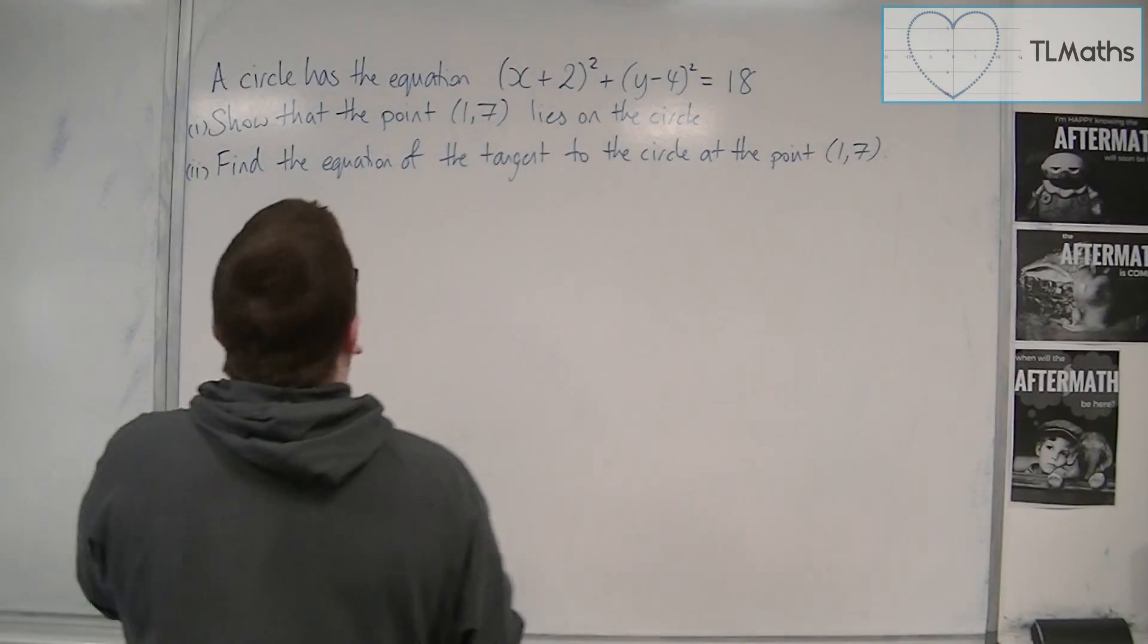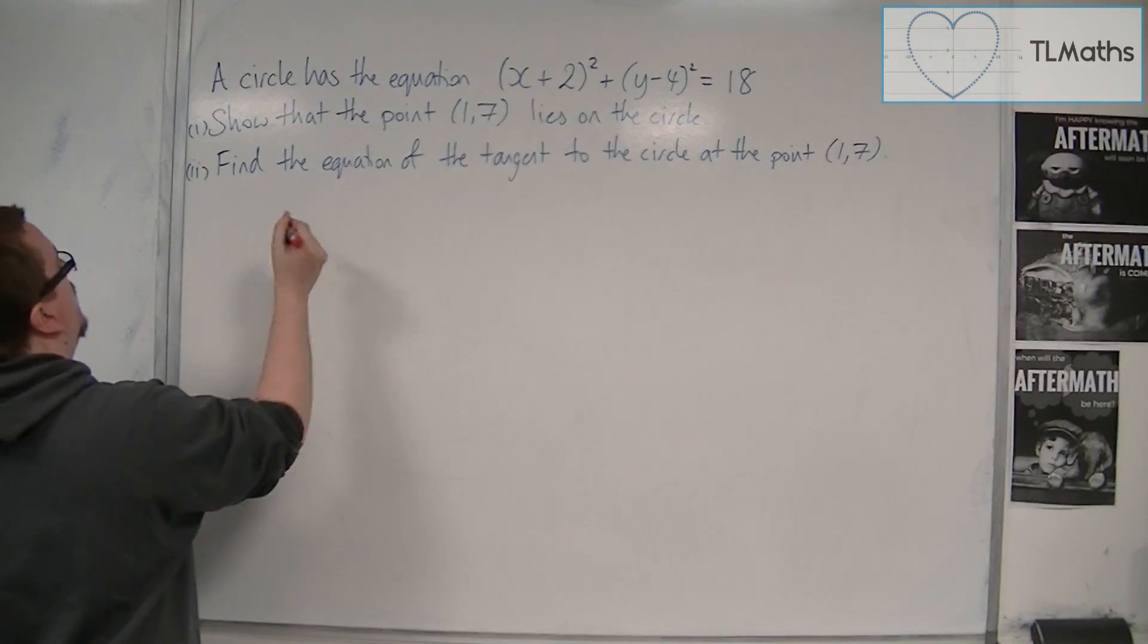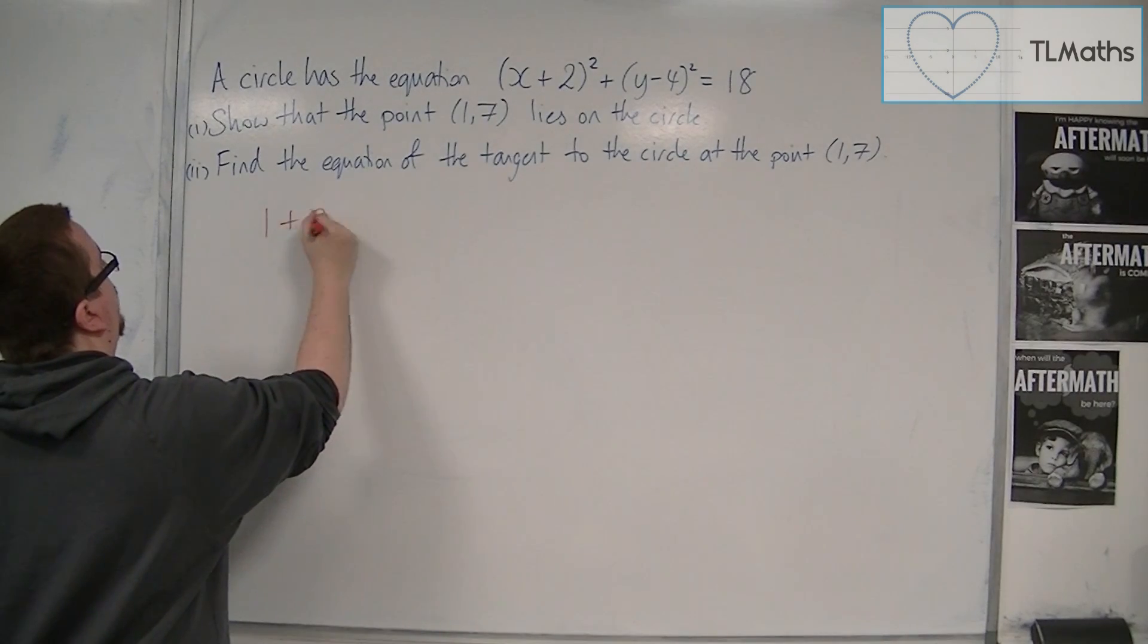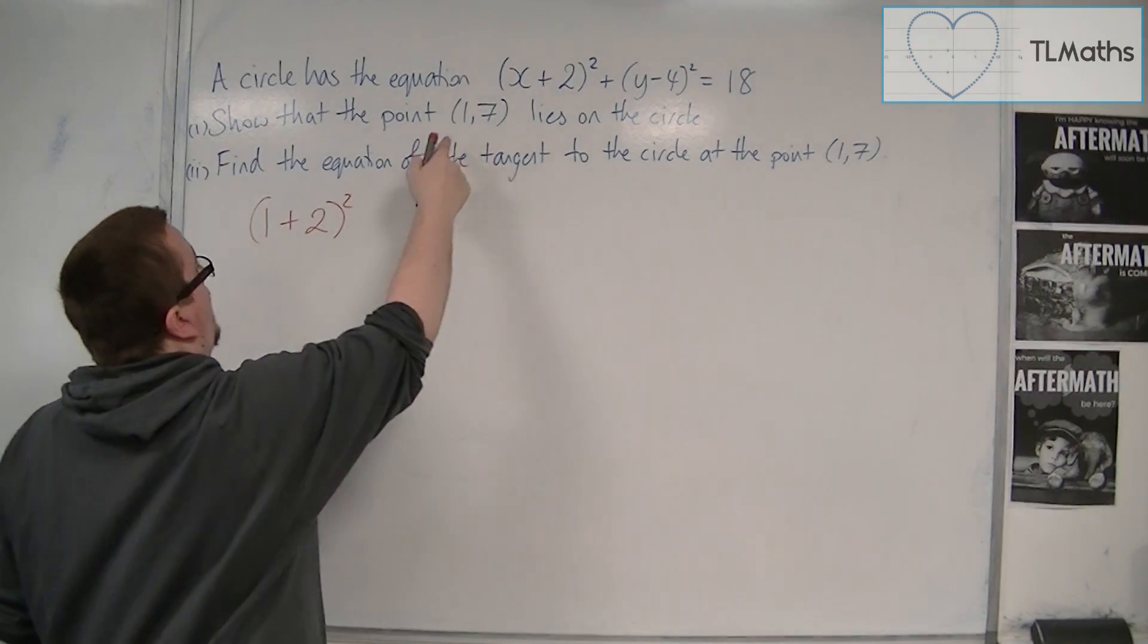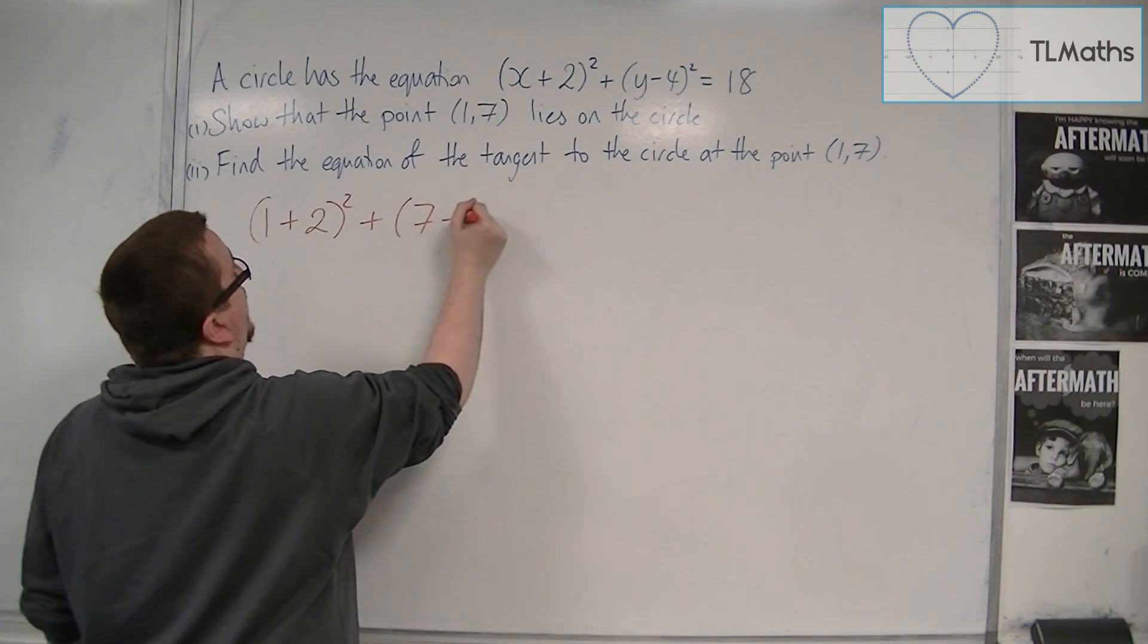So in order to do that we just substitute 1, 7 into the equation. So we're going to have (1 + 2)², so the x value is 1, and the y value is 7, so (7 - 4)².